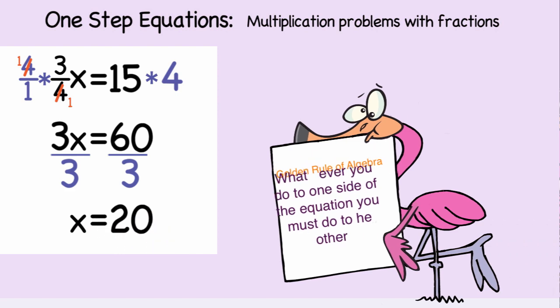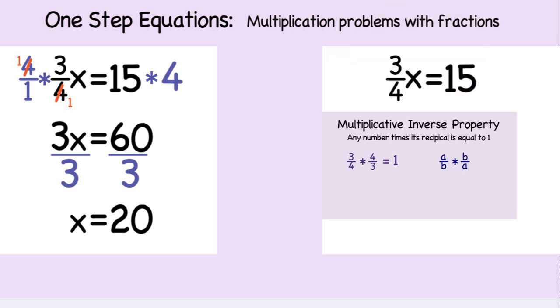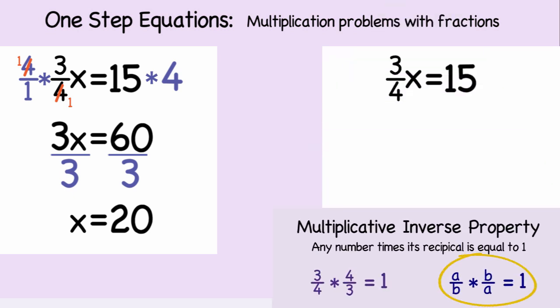So we can solve it that way, or we can solve the problem with just one step. We'll be using the multiplicative inverse property. That is, any number times its reciprocal is equal to 1. So the multiplicative inverse of three-fourths is four-thirds. So we'll multiply both sides of the equation by four-thirds.